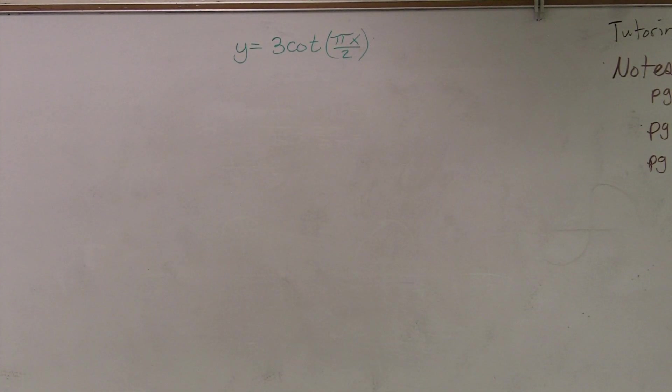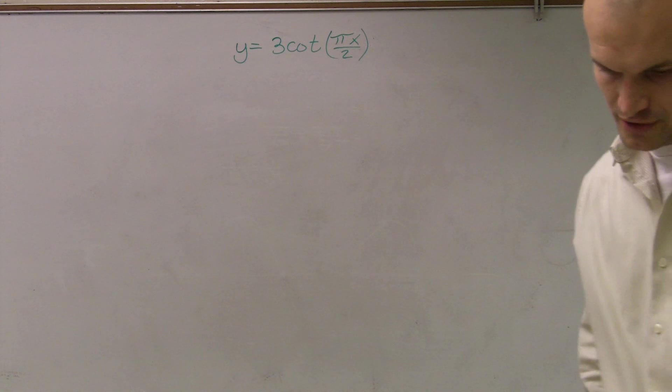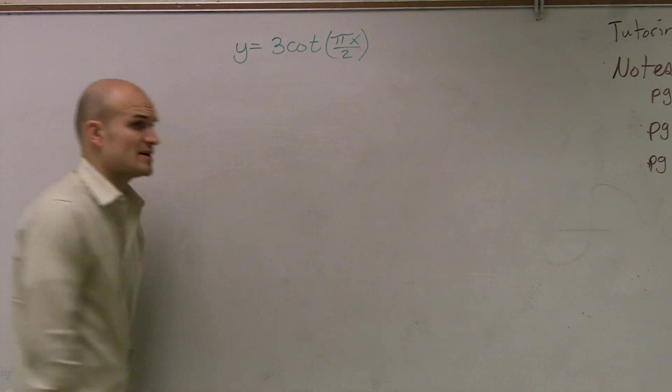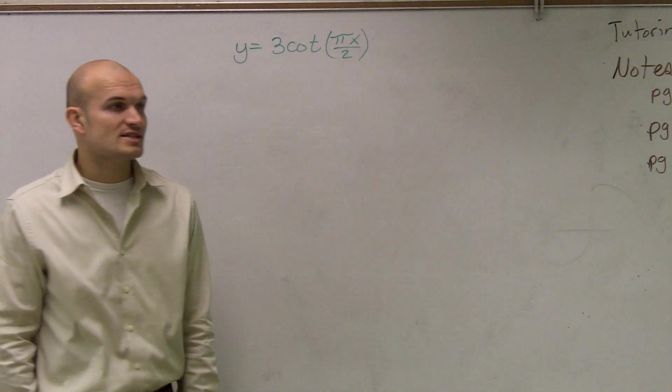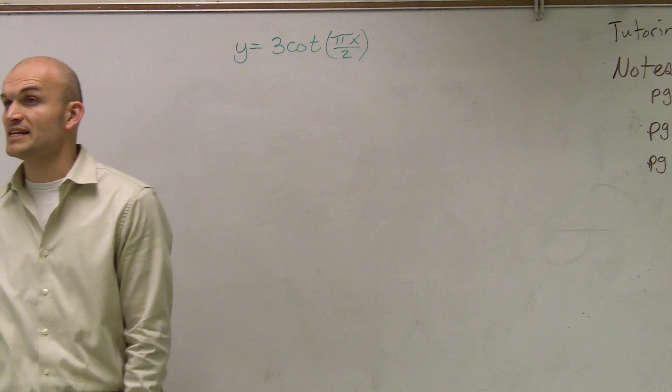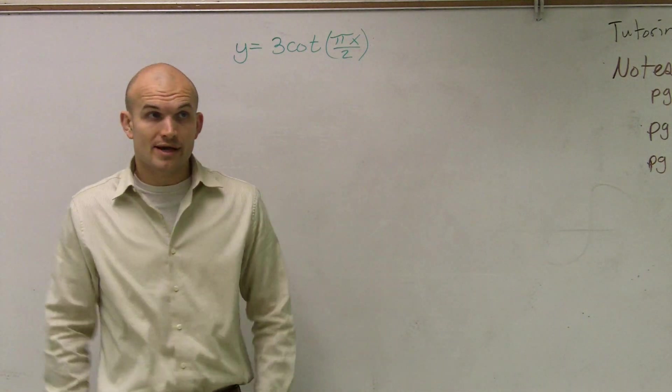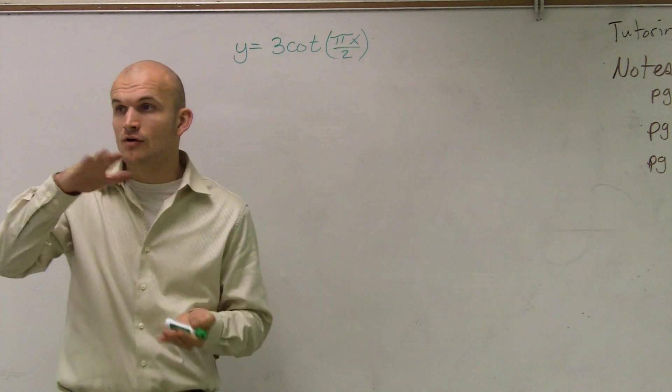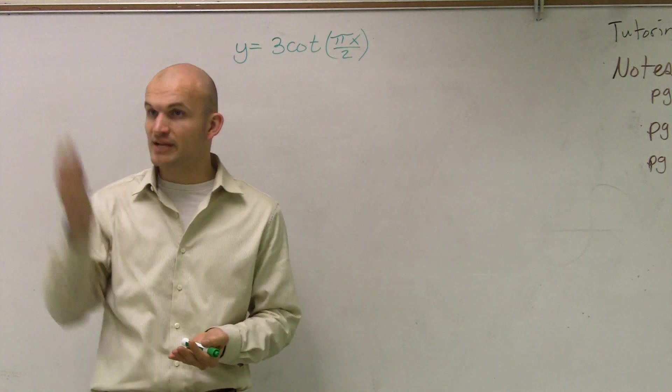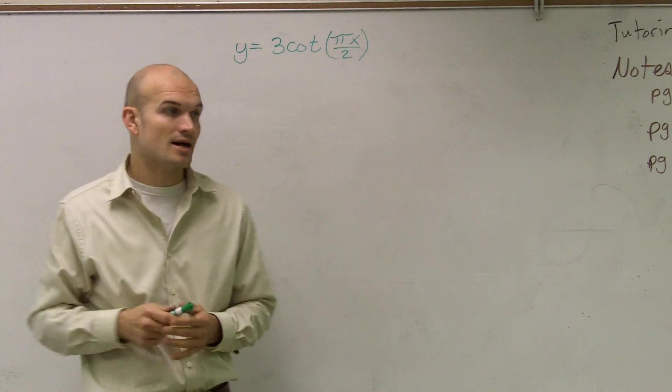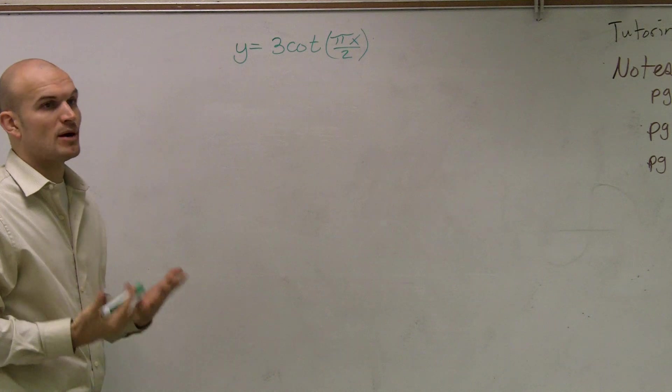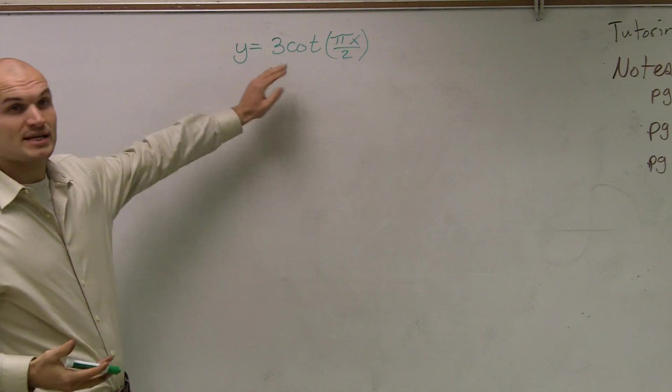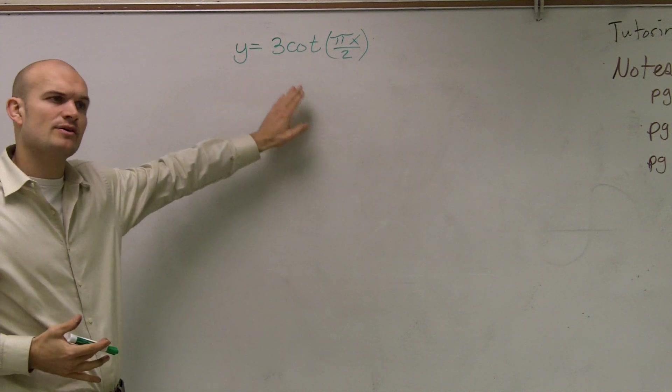Let's go ahead and see if we can graph y equals 3 cotangent of pi x divided by 2. If you guys looked at the parent graph, which hopefully you've already done and already have written down, you'll notice that the cotangent and tangents do not have an amplitude. There's no restriction on how high or how low they go. They go infinitely up and infinitely down as they approach asymptotes. So we don't need to worry about finding our amplitude anymore. This 3 is still going to have an impact on our graph, and I'll show you how.